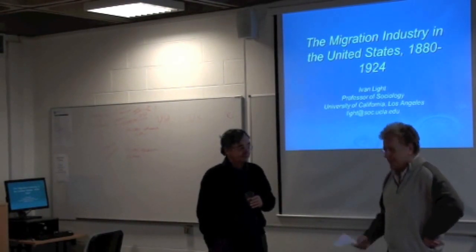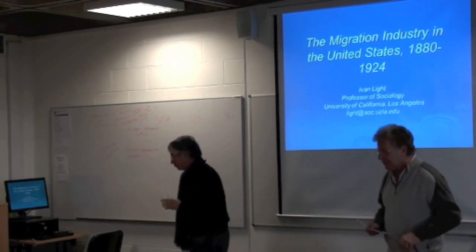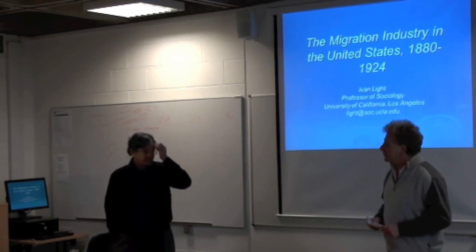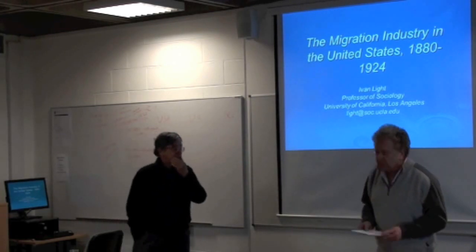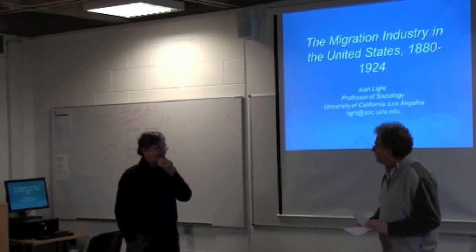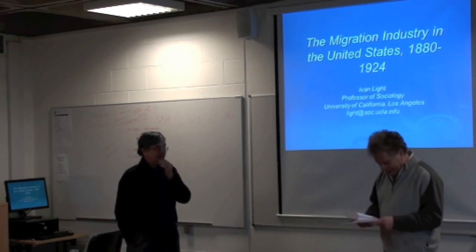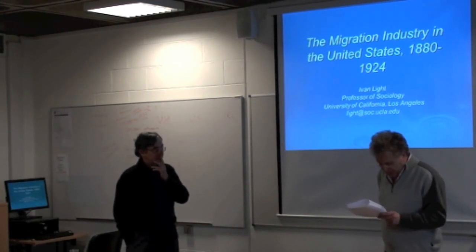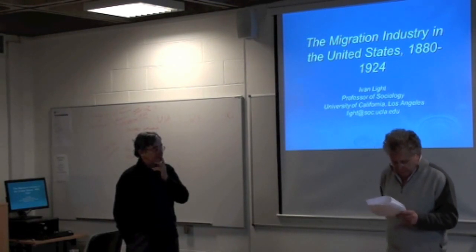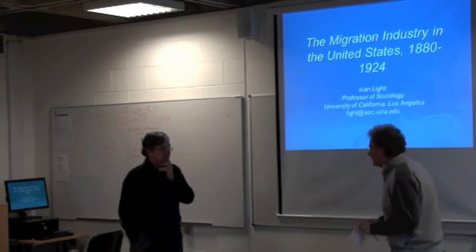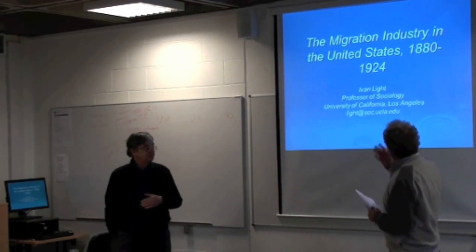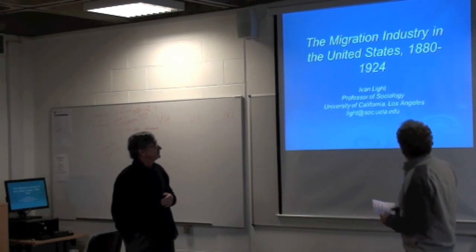I'm pleased to welcome one of the best professors, Yvonne Light, who is currently professor of sociology emeritus, the author of six books pretty much all in the field of immigration, entrepreneurship and urban sociology. He has received a number of awards, among them a book prize for reflecting immigration from the international migration sector, the American Sociological Association, also a distinguished contribution to scholarship by the Pacific Sociological Association, and a few other honours too long to list. Today he's going to talk about immigration history in the United States from 1880 to 1924.